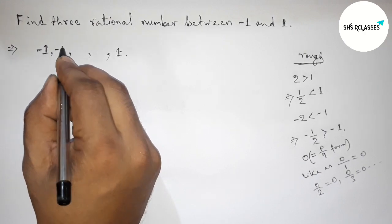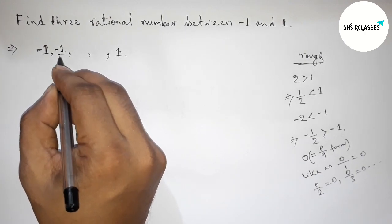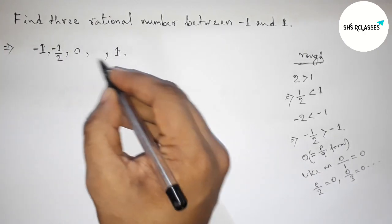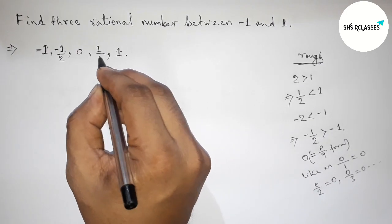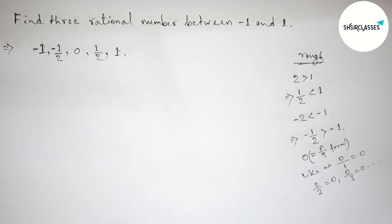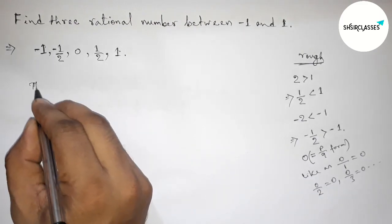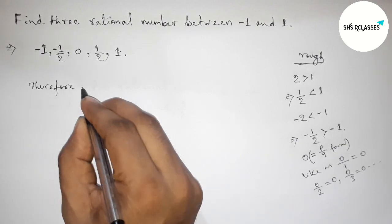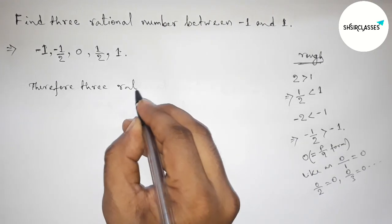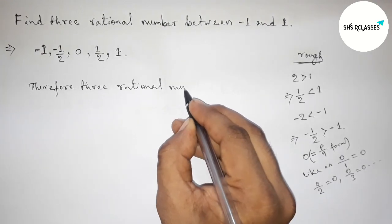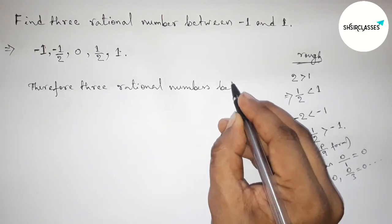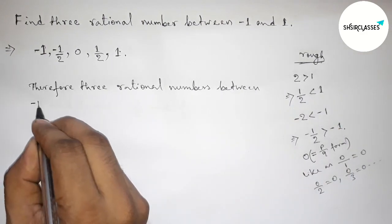So here, the first one is minus one by two, then here zero, and here one by two. These are the three required rational numbers between minus one and one.